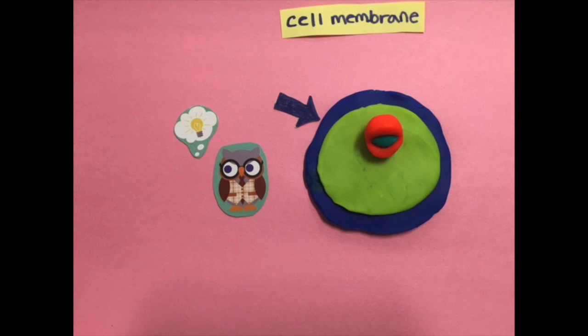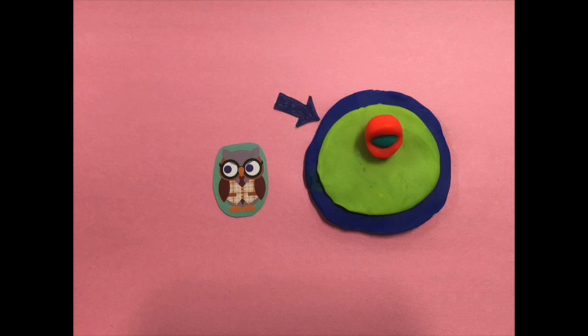The cell membrane gives shape to the cell and keeps the cell parts on the inside. The cell membrane acts as a plastic bag with tiny holes. The holes let some things move in and out of the cell.